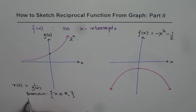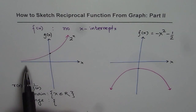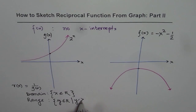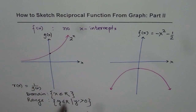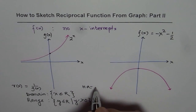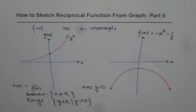How about the range? Since the function g of x is positive, the reciprocal will always be positive, so y belongs to real numbers where y is greater than 0. As you know, in a reciprocal function 1 over something, y is never equal to 0. In fact, the horizontal asymptote is y equals 0. So we do not have any vertical asymptote in both examples, but we do have a horizontal asymptote y equals 0.